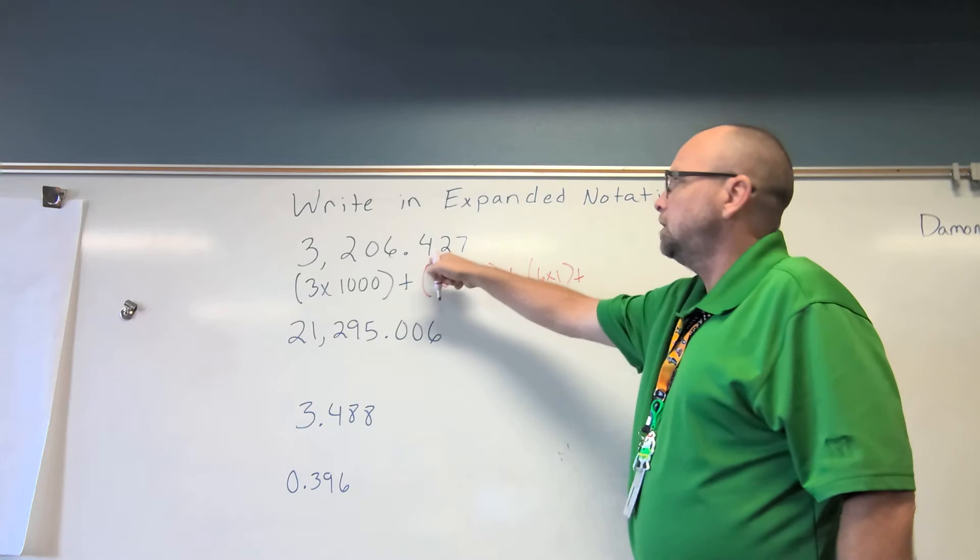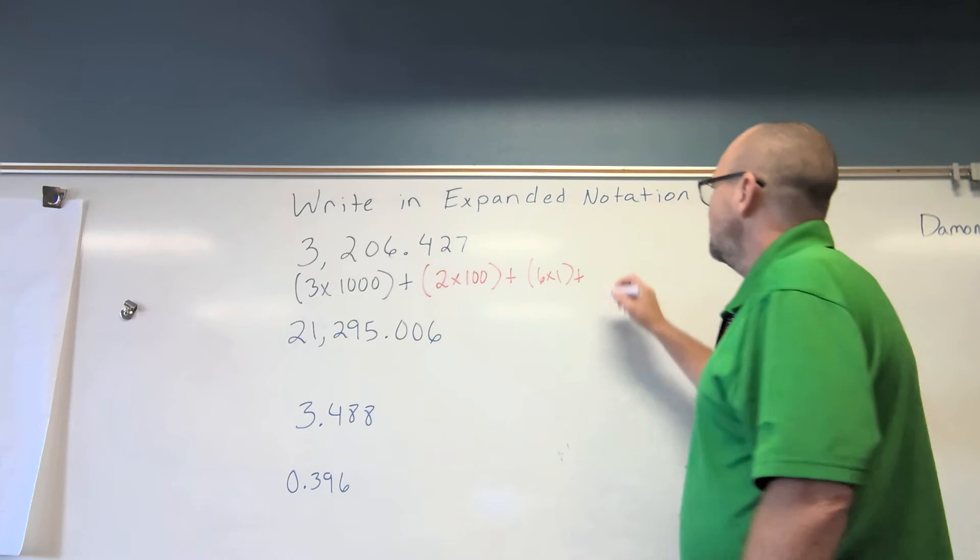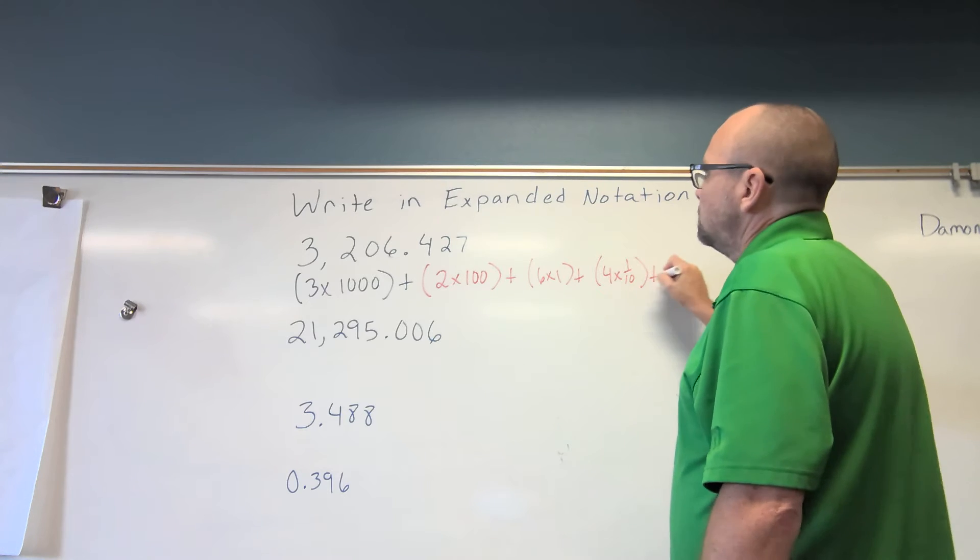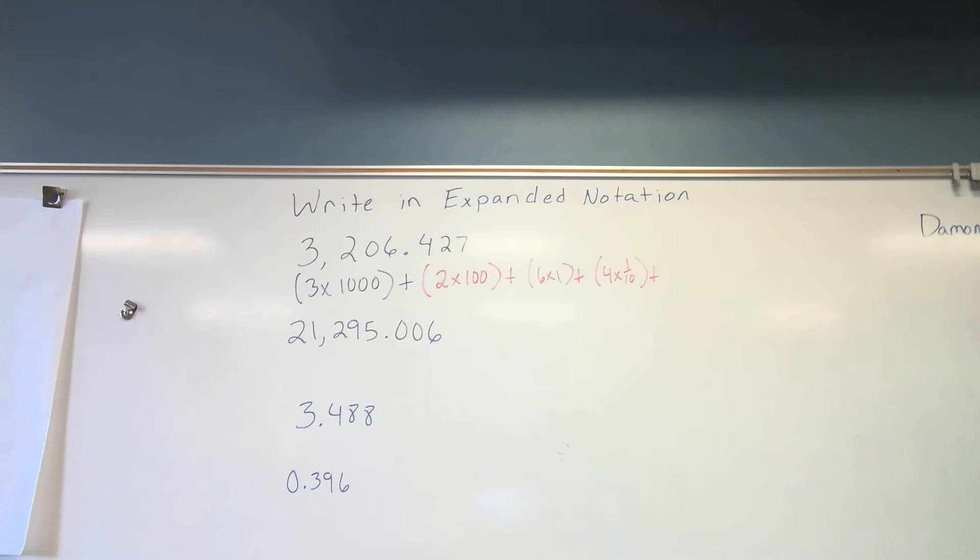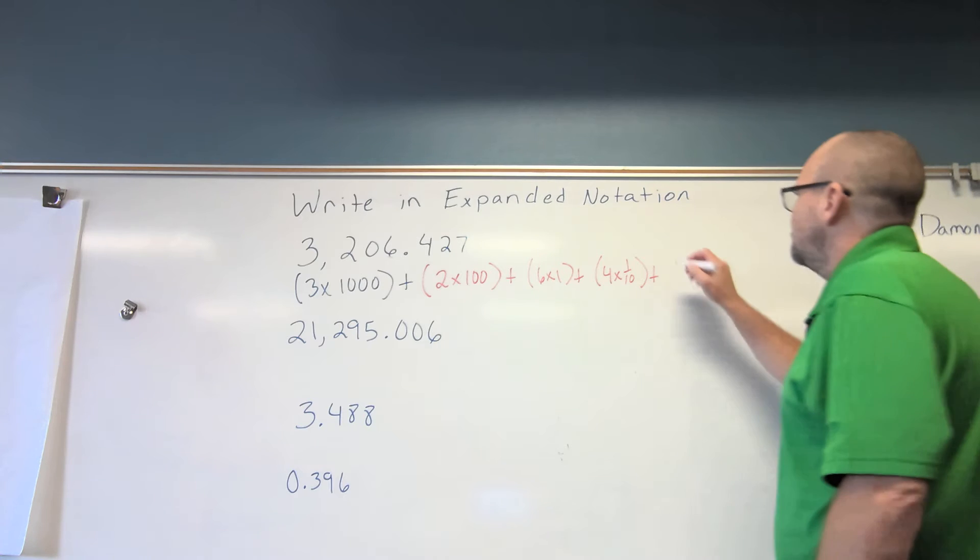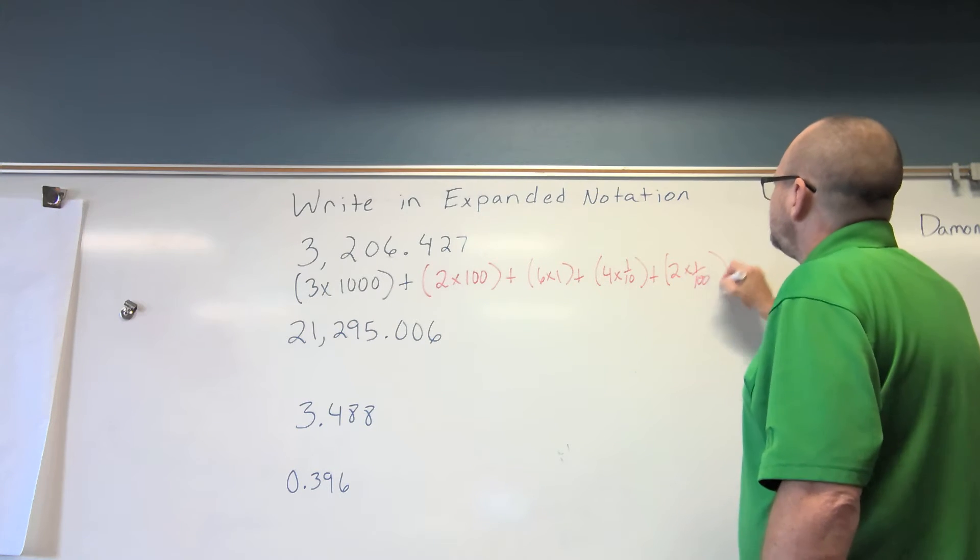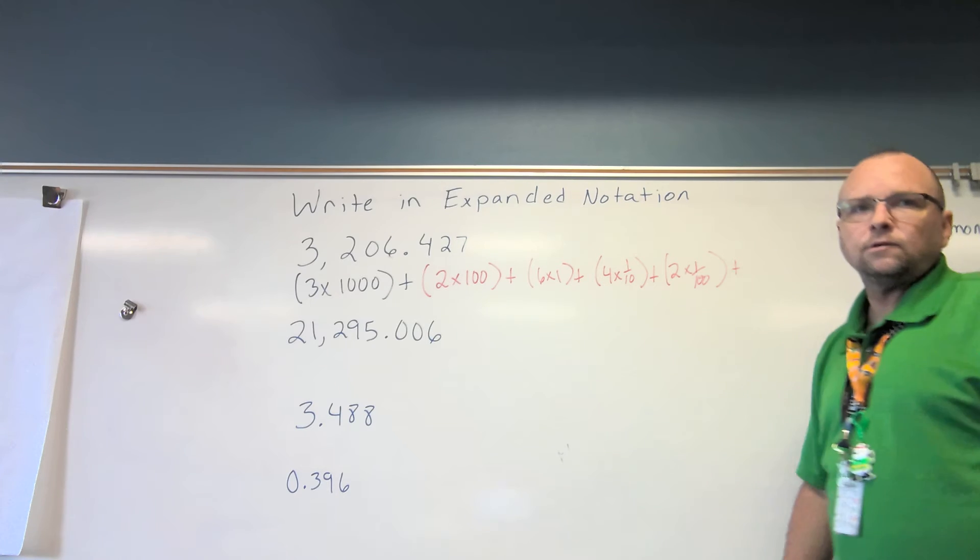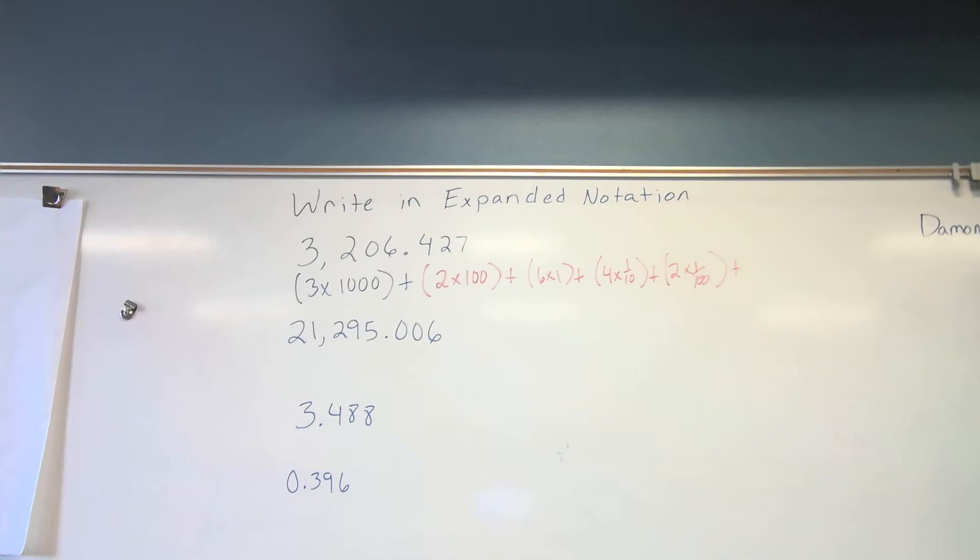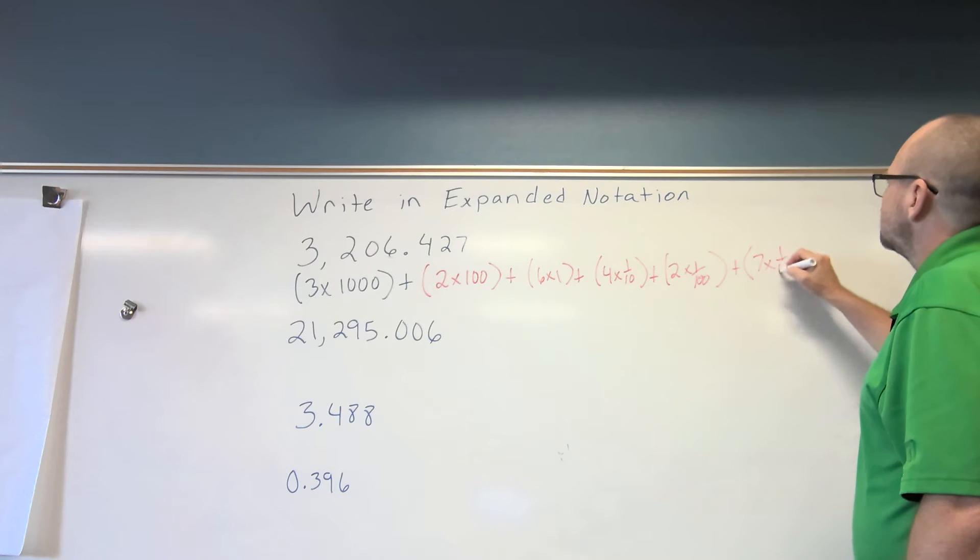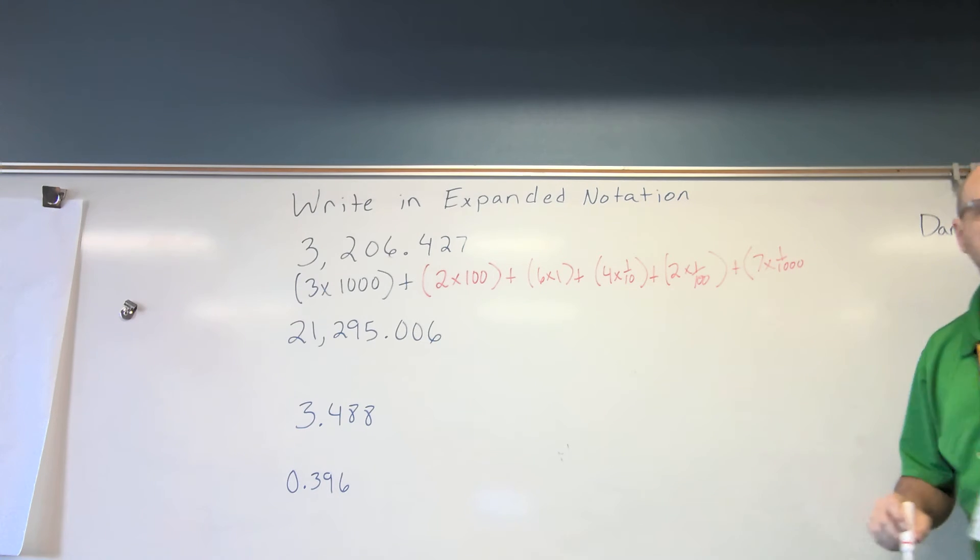Plus, what place value is the four in? Tenths. Plus four times one-tenth. Plus, what place value is the two in? Hundredths. Two times one hundredths. Plus, Azzy, what place value is the seven in? Thousandths. Plus, seven times one-thousandths. Fairly easy.